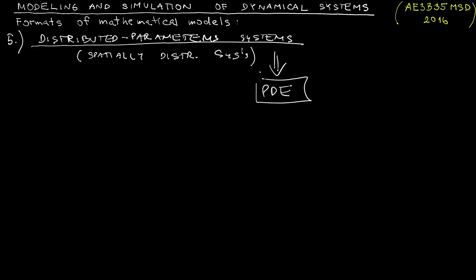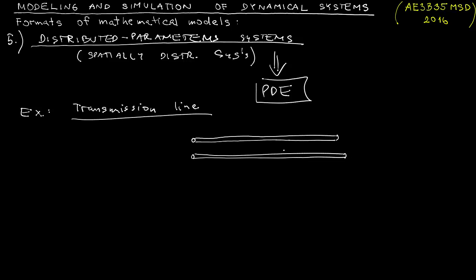These systems are modeled by partial differential equations. A prominent example of which in the electrical engineering domain is a transmission line. Here we consider two sufficiently long and sufficiently close cables that are used to connect the generator and load or a transmitter and a receiver.